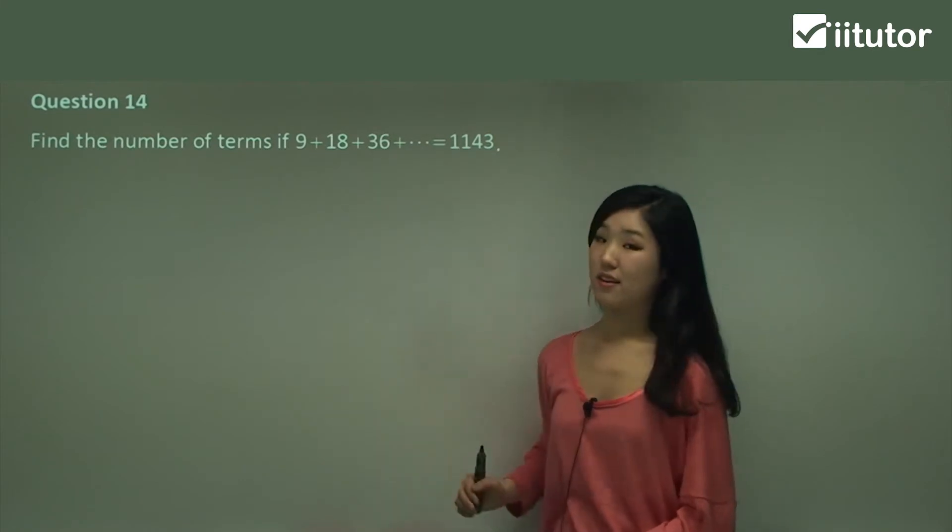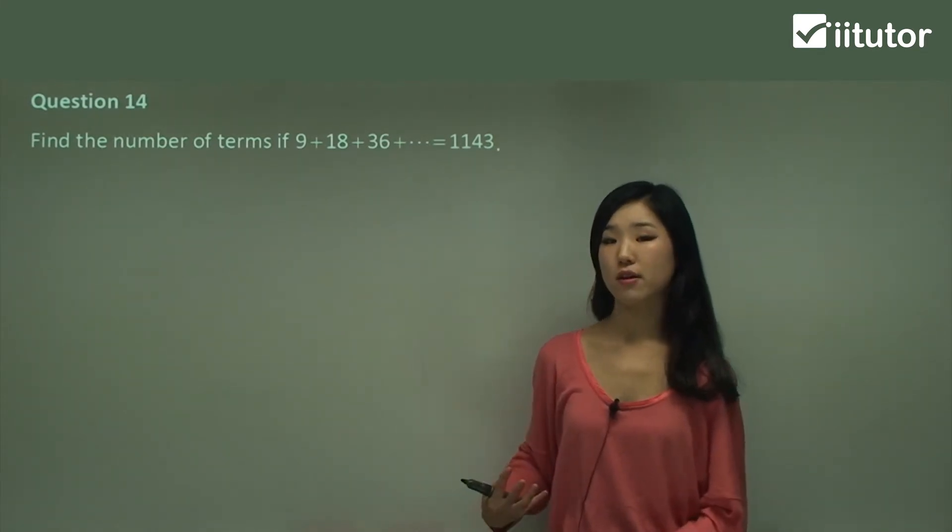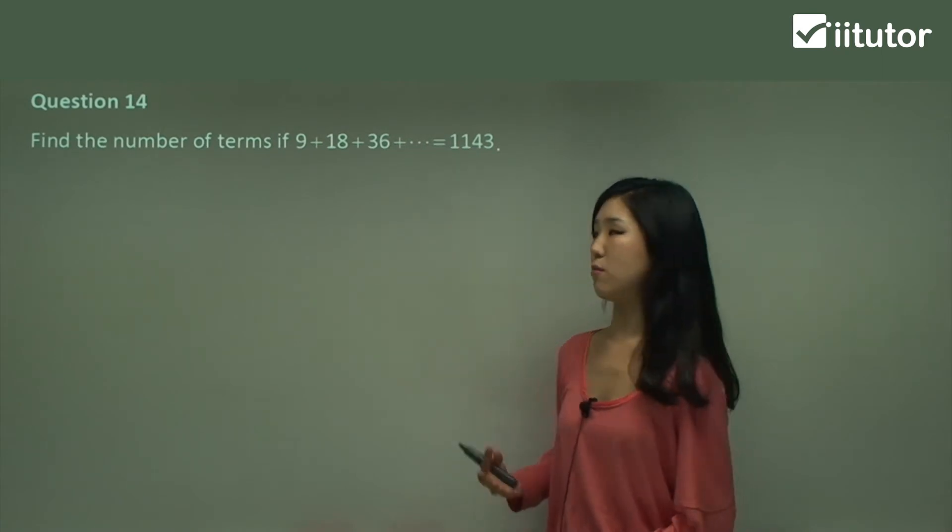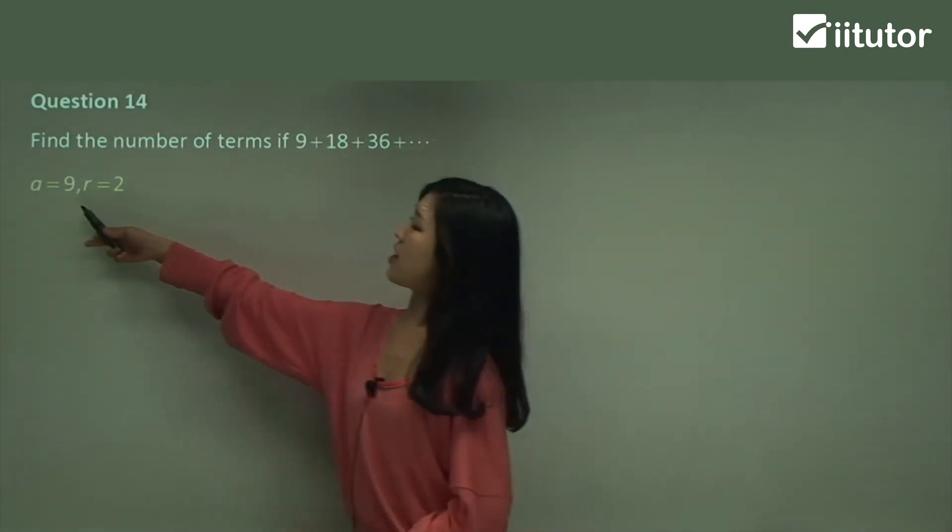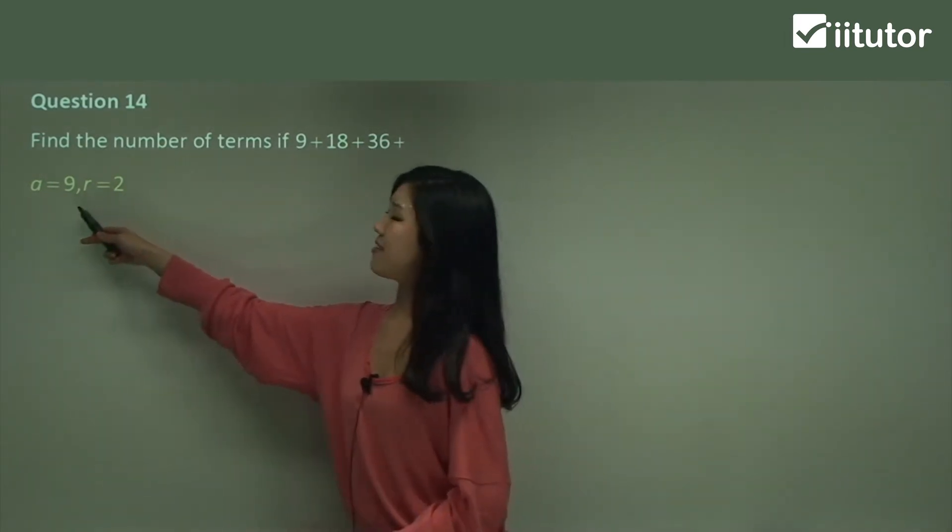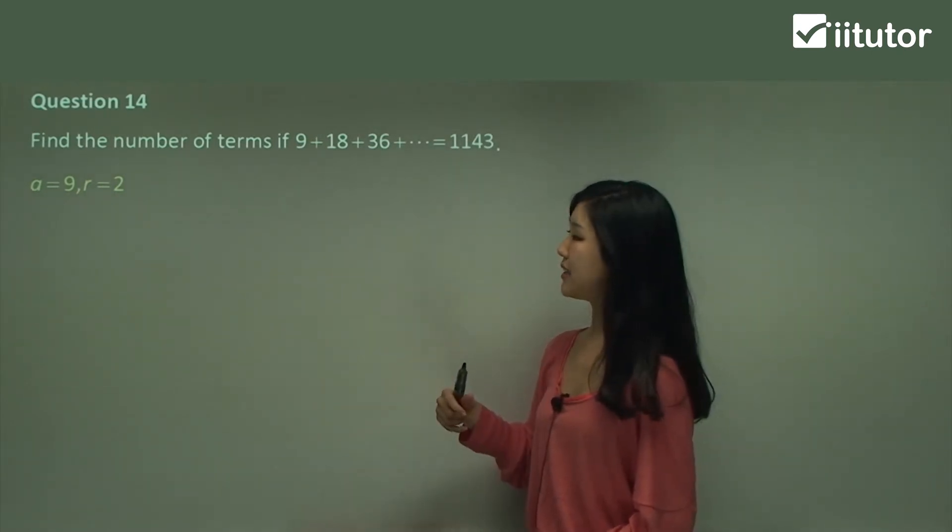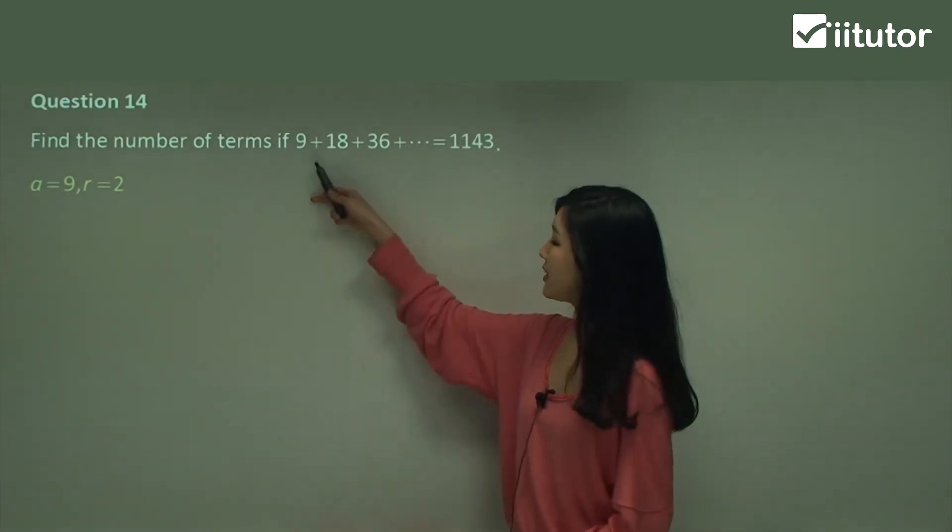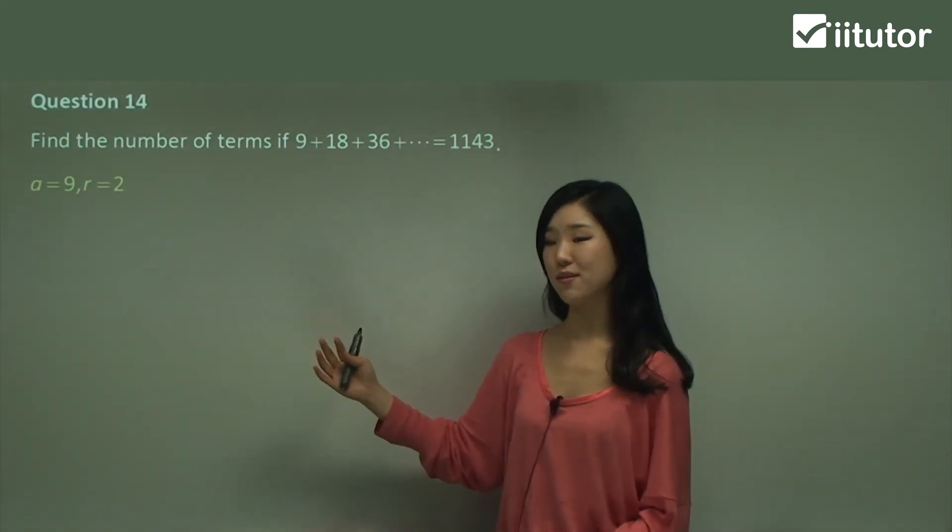So guys, have a look at the series. First of all, decide what your a is and what your r is—what your first term is and what your common ratio is. So I hope you can see that the first term is going to be 9. So a is 9, and what's r? r is simply 2, because 9 times 2 is 18, 18 times 2 is 36. So therefore, the common ratio must be 2.